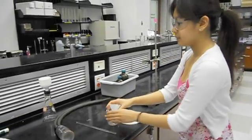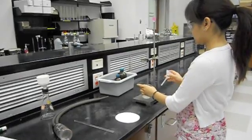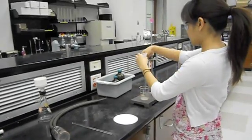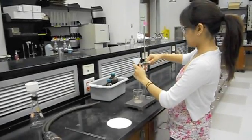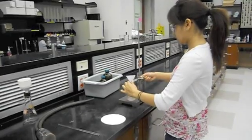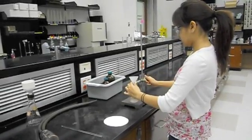Using a ring stand and clamp, place a funnel with a long neck into the clamp and tighten it to hold it in place. Move the clamp down so that the neck of the funnel is inside the beaker.